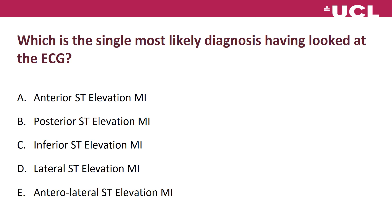Question: what is the single most likely diagnosis having looked at the ECG? A) anterior ST elevation MI, B) posterior ST elevation MI, C) inferior ST elevation MI, D) lateral ST elevation MI, E) anterolateral ST elevation MI. The answer is C, inferior ST elevation MI, and the next slides will explain why.